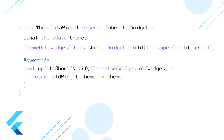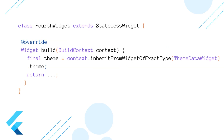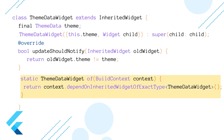Now let's provide the theme data to the inherited widget, which will be inherited down the tree. Any descendant widget can access this theme data in its build method by calling dependOnInheritedWidgetOfExactType. By passing the type into this method, it tells the Flutter framework to go up the widget tree starting from the build context and look for the widget that matches that type. But to make things simpler, you will also find a static method in the inherited widget — that is the of method — which does the same thing.